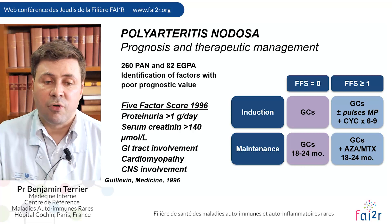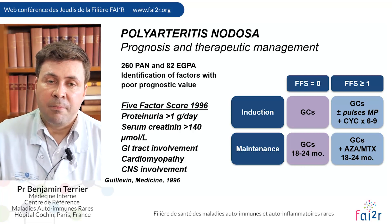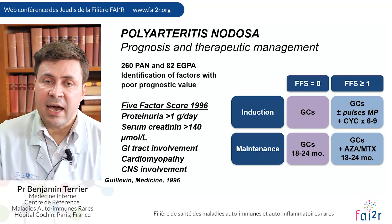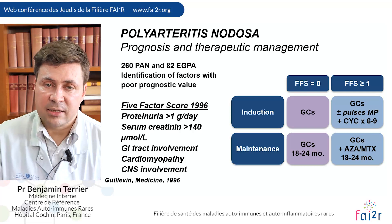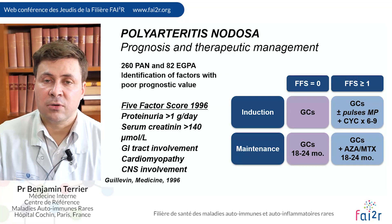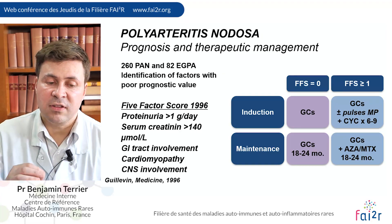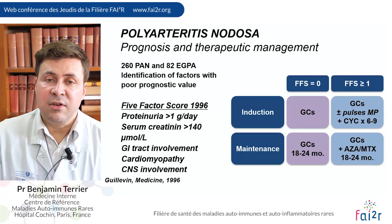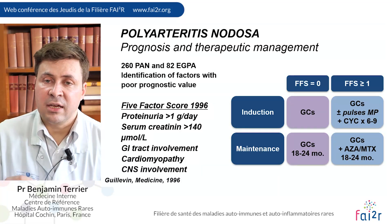Regarding prognosis and treatment, management is based on the Five-Factor Score (FFS). We use the one established in 1996, because it was specifically designed for PAN and also eosinophilic granulomatosis with polyangiitis. The five factors significantly associated with poor prognosis are shown here.